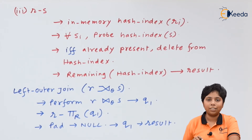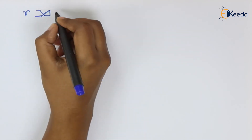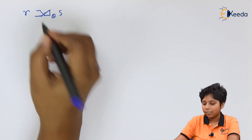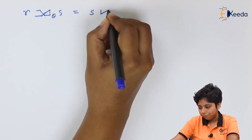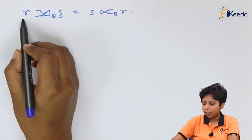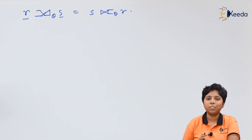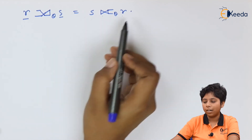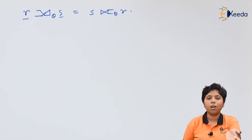For the right outer join, the process is the same: we perform r theta join s, then subtract s from the theta join saved in q1. Notably, r left-outer-join s is always equal to s right-outer-join r — so if we just swap the positions of r and s, the left outer join becomes the right outer join.